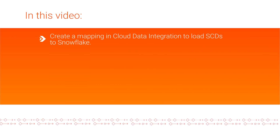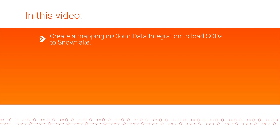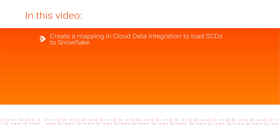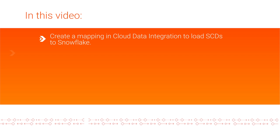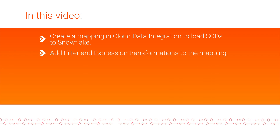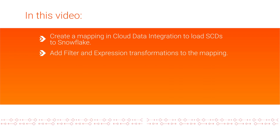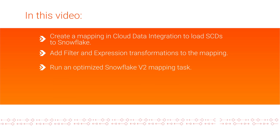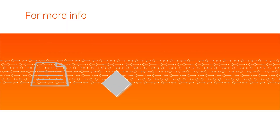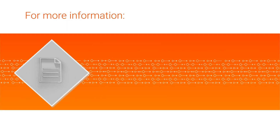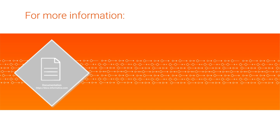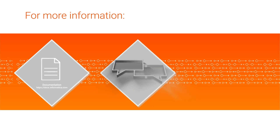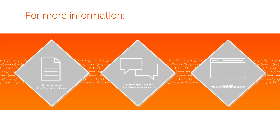And that's it! In this video, we showed you how to create a mapping in Cloud Data Integration using a Snowflake Cloud Data Warehouse v2 connection to load slowly changing dimensions, or SCDs, to Snowflake, add filter and expression transformations to the mapping to load new and updated records to the target dimension table, and how to run and optimize a Snowflake v2 mapping task. For more information, see the pushdown optimization chapter in the Snowflake Cloud Data Warehouse v2 connector guide. Visit our communities and support hubs, or check out our website!